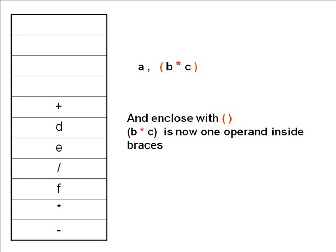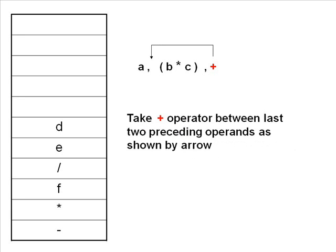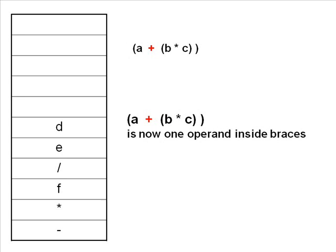So A and (B*C) are now only two operands. We pop the next character, which is plus — an operator. We follow the same procedure and place plus between A and (B*C). So A+(B*C) now becomes a single operand.